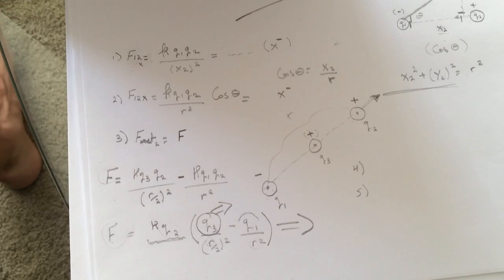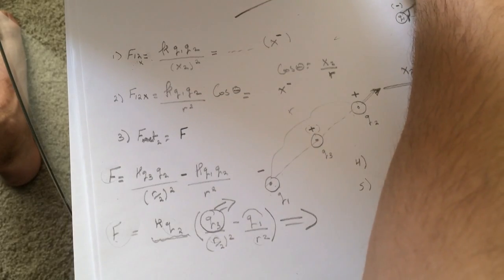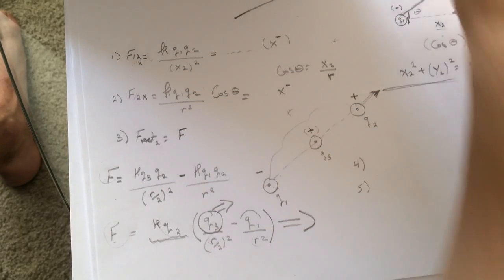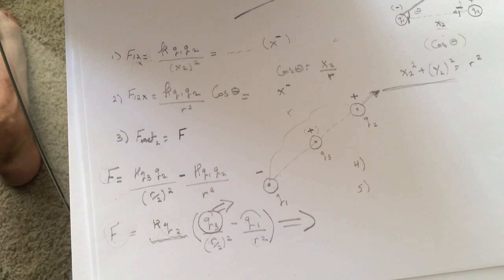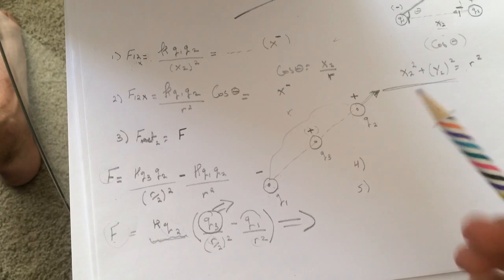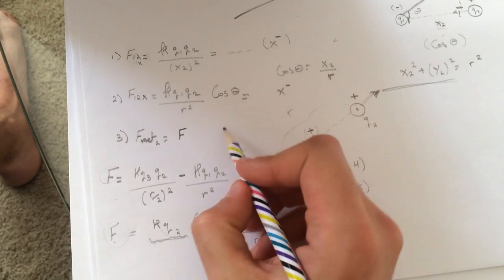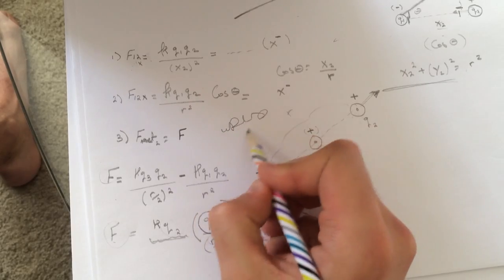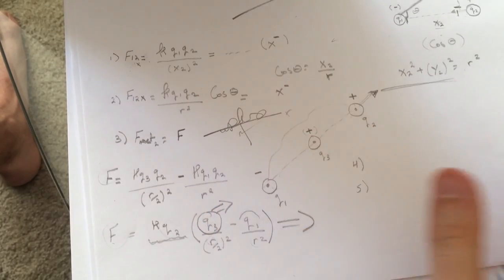For number five this one how would you change Q3 keeping Q1 and Q2 fixed to make the net force on Q2 equal to zero? And then the answer is for this guy you need to decrease the magnitude and keep the sign same. Cool all right guys hope this helped good luck.